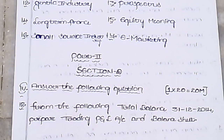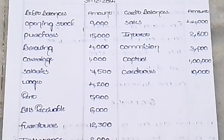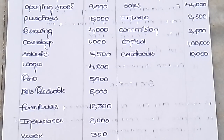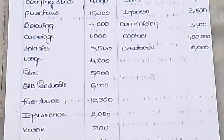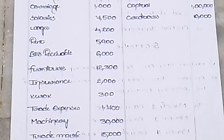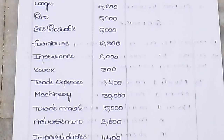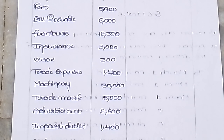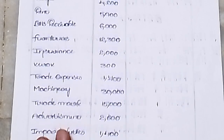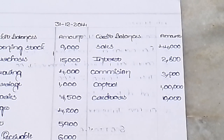Section D: Twenty marks. From the following information prepare Trading and Profit & Loss Account and Balance Sheet. Debit balances: opening stock 9,000; purchases 15,000; drawings 4,000; carriage 1,000; salary 7,500; wages 4,200; rent 5,900; lease receipts 6,000; furniture 12,300; insurance 2,000; machinery 3,000; trade expenses 1,700; machinery 30,000; trademark 15,000; advertisement 2,600; import duty 1,400; coal 1,500; debtors 40,000; budget 600; trade sales 44,000; interest 2,800; commission 3,200; capital 1 lakh; creditors 10,000.